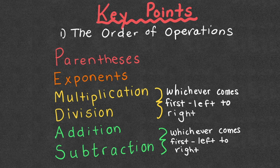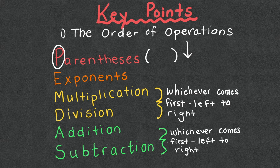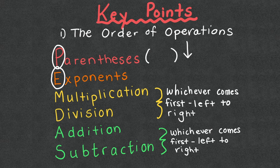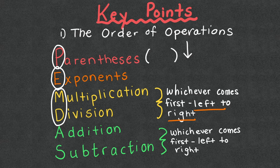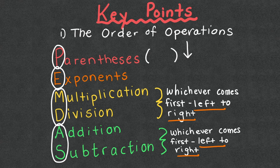The order of operations: first, deal with parentheses. Next, exponents — anything squared, cubed, or to any power. Then, multiplication or division — whichever comes first left to right. Finally, addition or subtraction — again, whichever comes first left to right. So if subtraction comes before addition reading left to right, subtraction goes first.